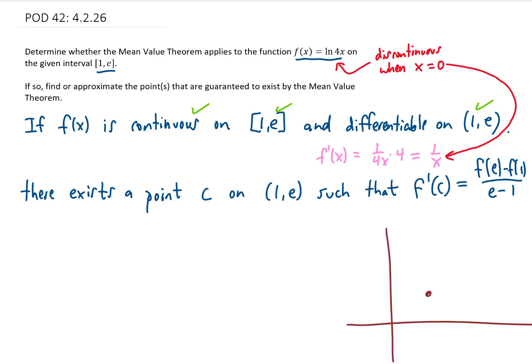what this says is if we have some function between the two x values a and b, their two y values are then f of a and f of b. And as long as this function is continuous between those two points and differentiable between those two points,